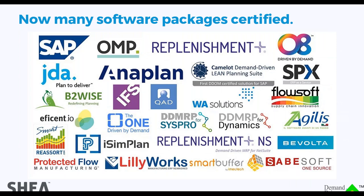The next question is: is there software? You could certainly do small DDMRP implementations on a spreadsheet — I'm happy to show you how. But if you're pushing significant parts and inventory value, you probably want to get software. There are software packages available for DDMRP and they all work the same because they're certified by the Demand Driven Institute through an auditing process — no money exchanged. SAP has it in their S4 HANA version. Most ERP systems now have a bolt-on, and some are natively built in.